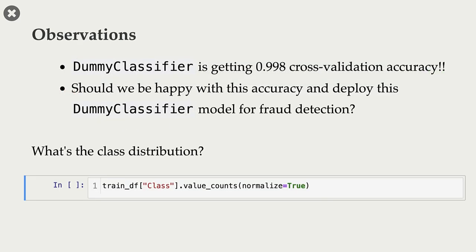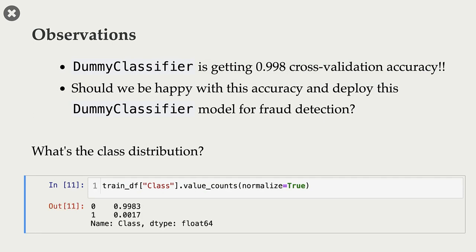Let's look at this. Now, what is the class distribution? If we call value_counts on our train_df of class, then we see that 99.83% of our transactions are non-fraud transactions. And only 0.17% of the transactions are fraud transactions.